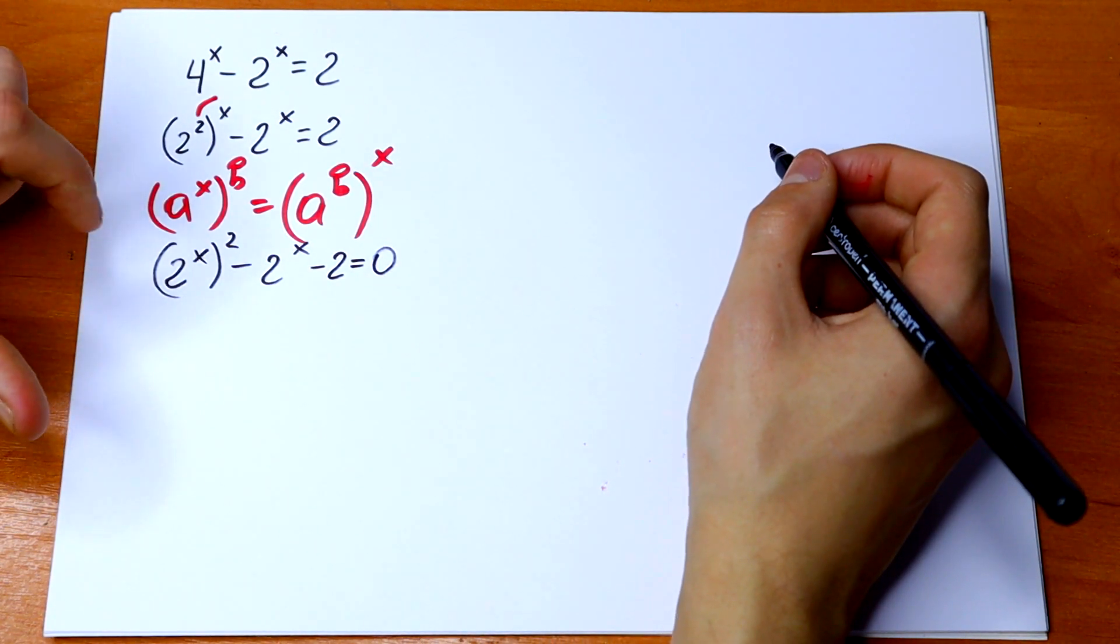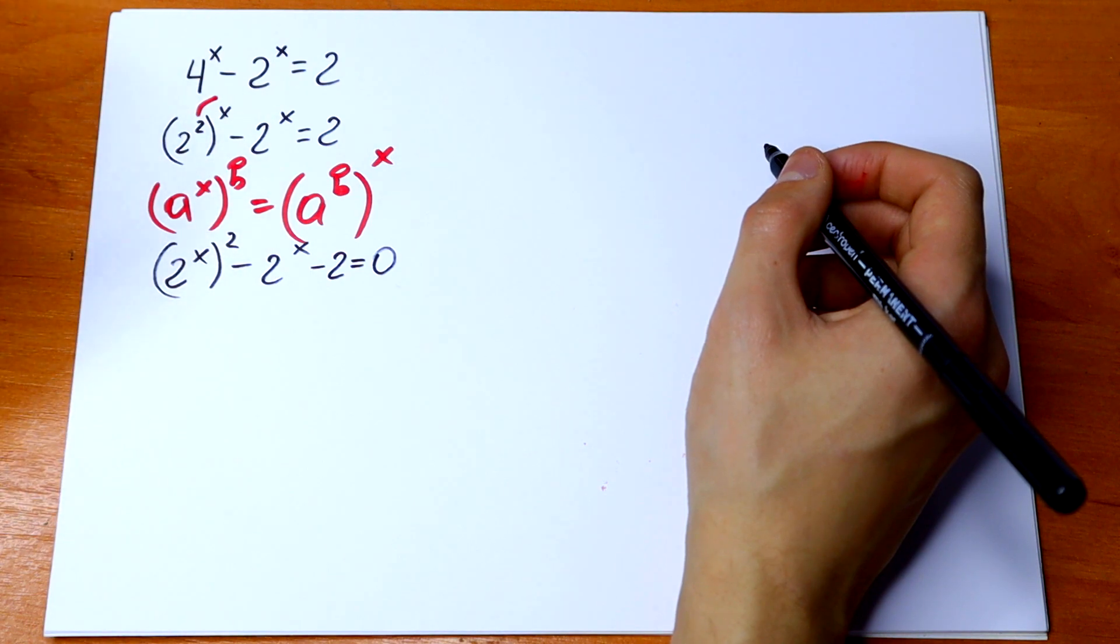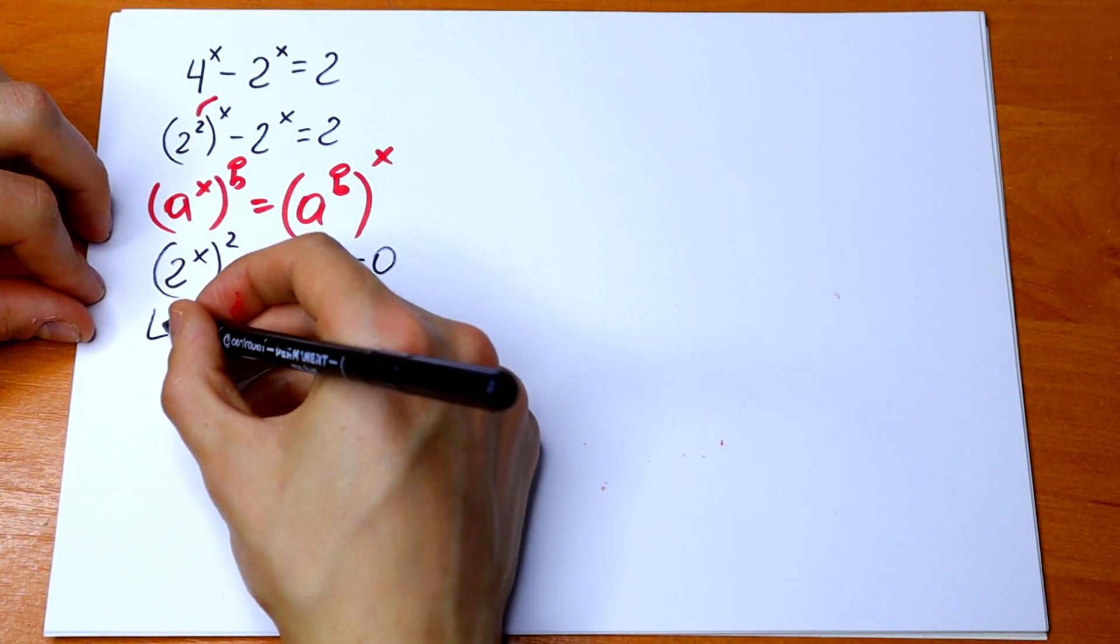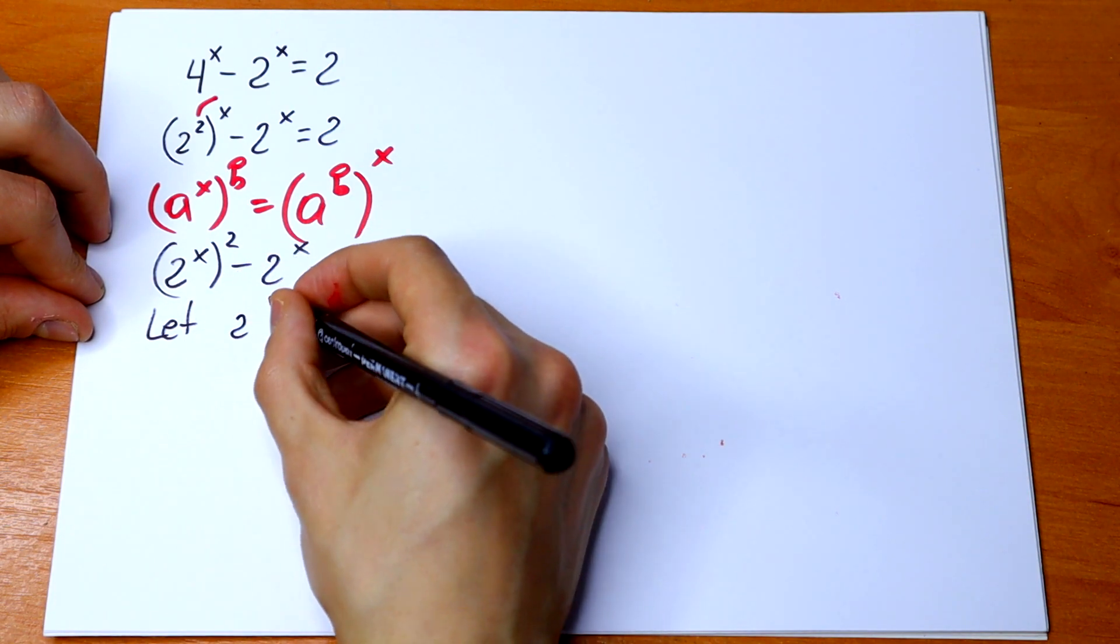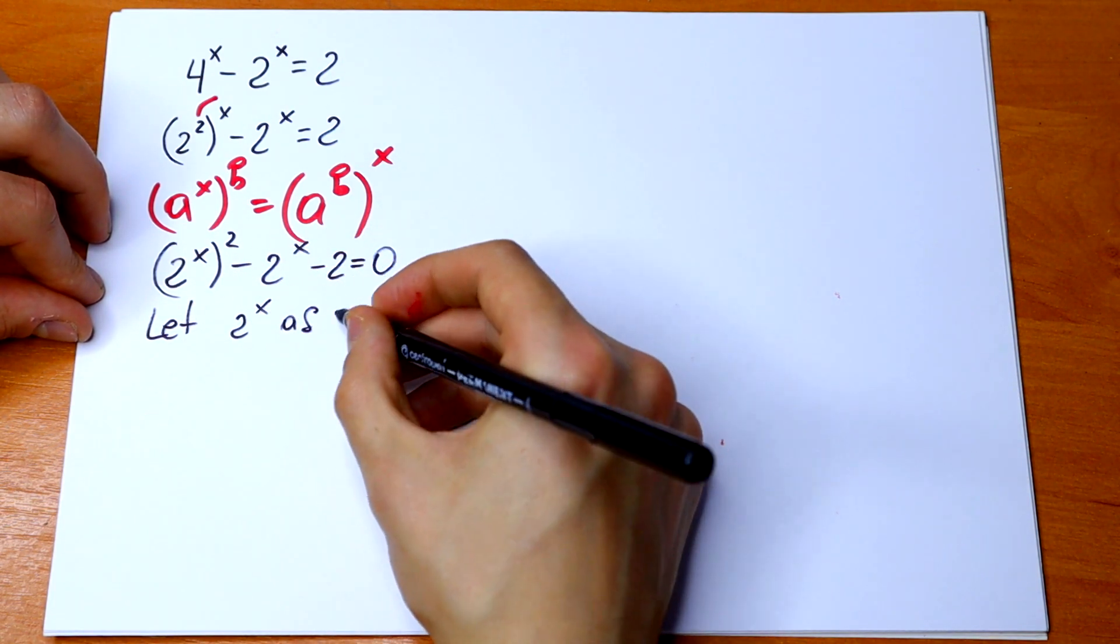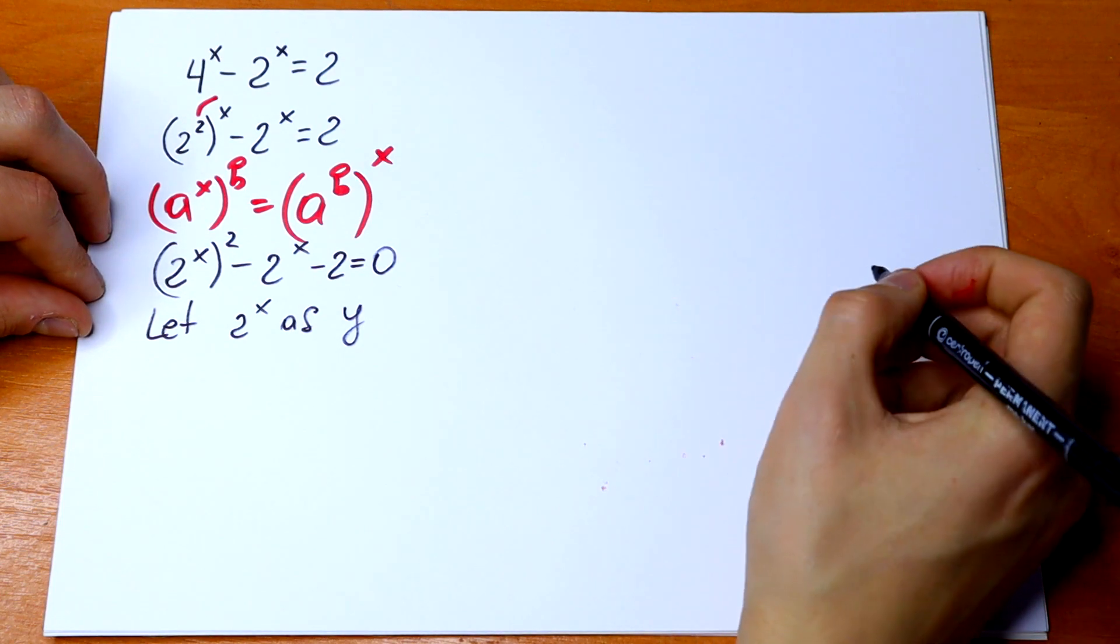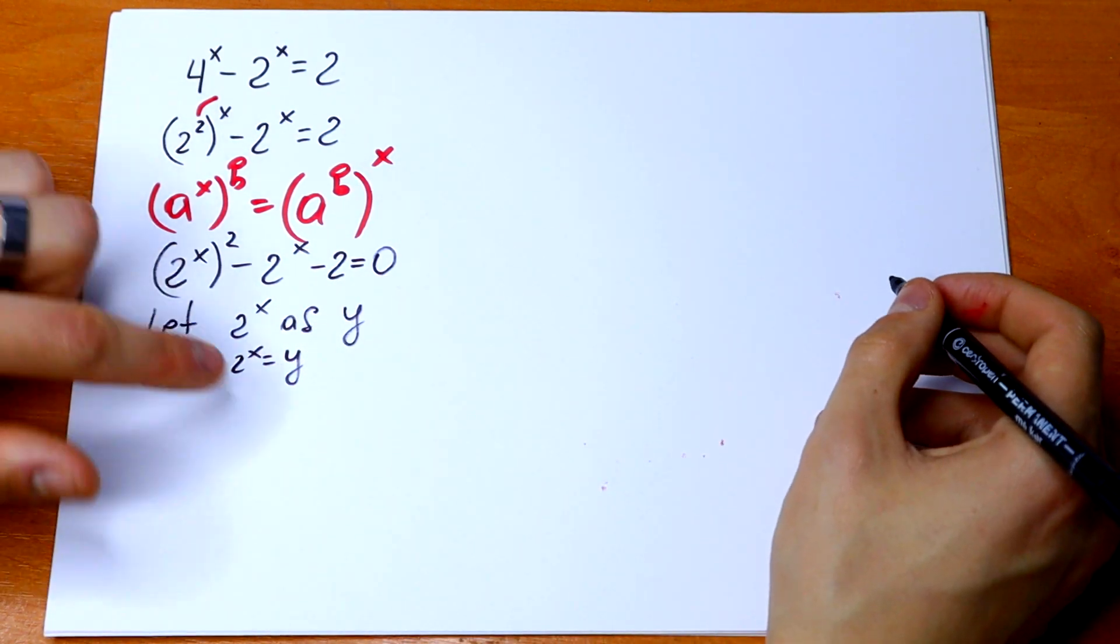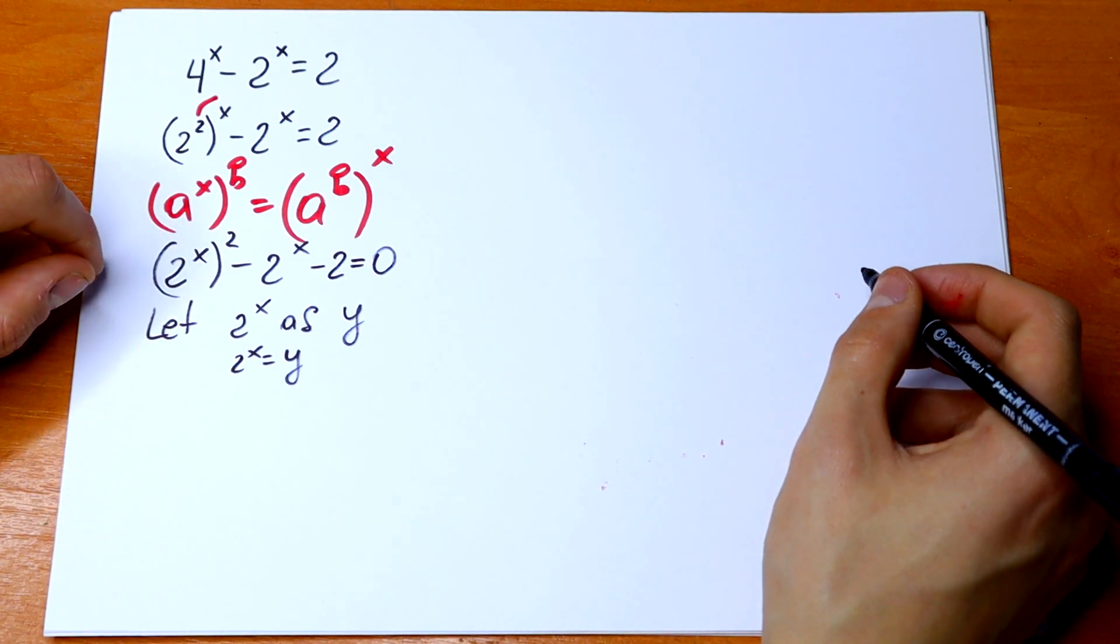This is a good case for us because we have 2^x and 2^x. So we can make a substitution. Let 2^x equal y, and we'll substitute y instead of 2^x.